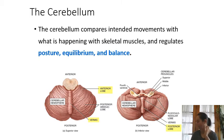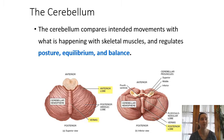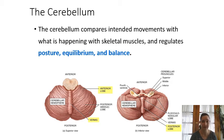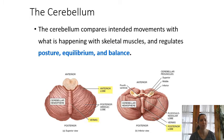Moving on to the cerebellum, located at the back of the head. The cerebellum is important for movement, muscle control, and especially maintaining balance and posture. It's also important for muscle memory — the fact that once you learn to walk as a baby, ride a bike, or play piano, you don't forget it. Any kind of muscle memory is probably controlled by the cerebellum.